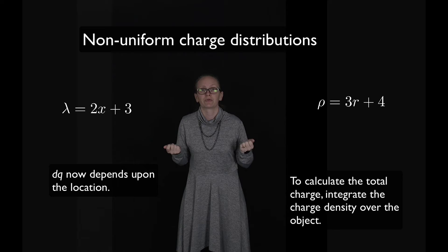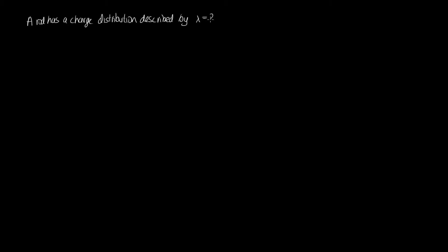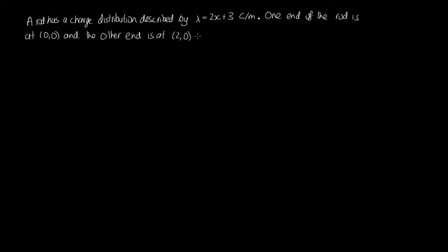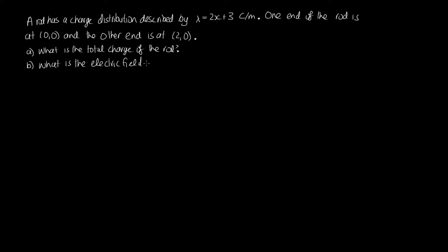Let's look at an example. A rod has a charge distribution described by lambda equal to 2x plus 3 coulombs per meter. One end of the rod is at (0, 0) and the other end is at (2, 0). Part A: what is the total charge of the rod? Part B: what is the electric field at (3, 0)?